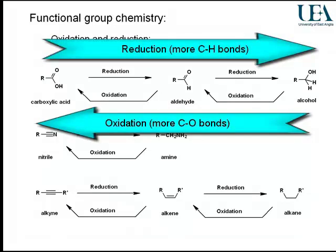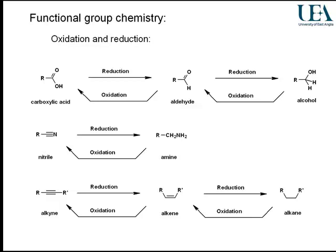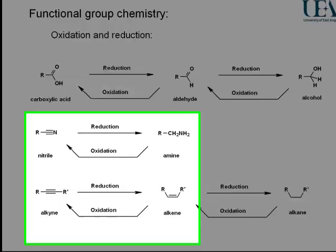Glancing at these structures, recognizing their names and chemical relationships, tells you how to convert them. Some of them are interconverted by acid hydrolysis or by base-catalyzed hydrolysis. Some of them are converted by oxidation or reduction steps. In order to understand the types of reagents and mechanisms that correspond to those changes, you need to have an impression of what type of process you need. So this slide is all redox processes.